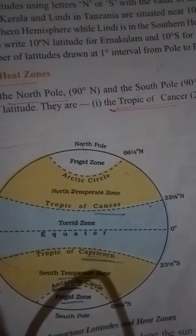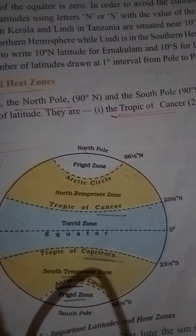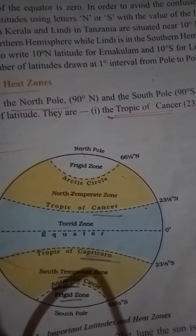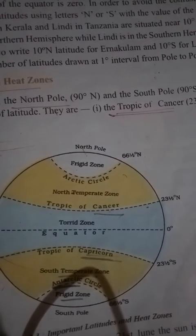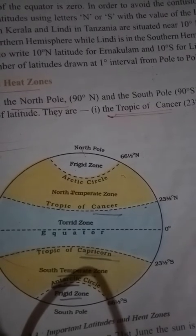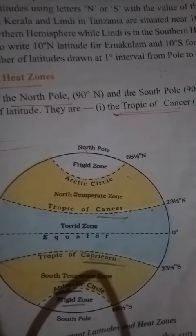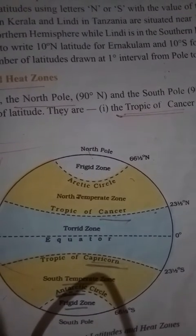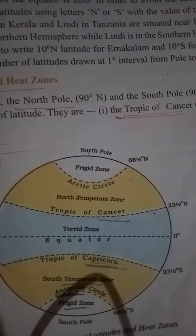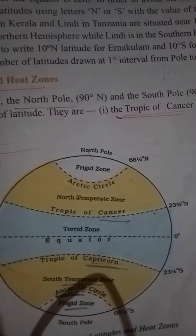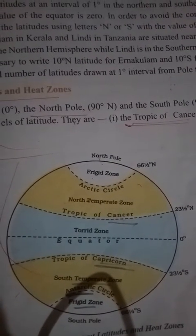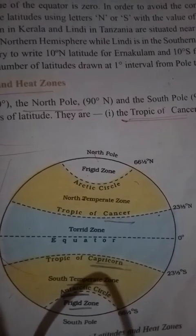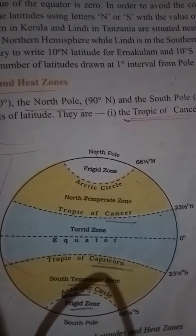If you join those dots, they will form a very large circle around the globe. Similarly, around the Earth, we understand there is one such circle. This circle is imaginary. This imaginary circle is the largest possible circle that can be drawn on the globe — the one in the very center. It is called the equator.